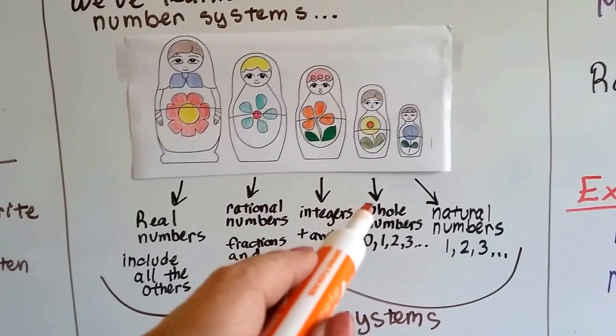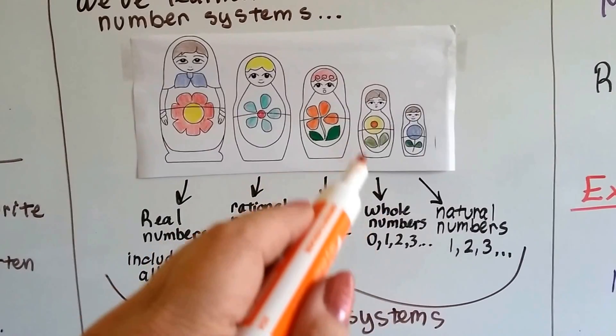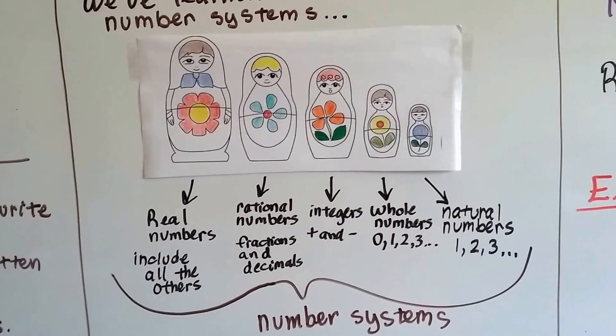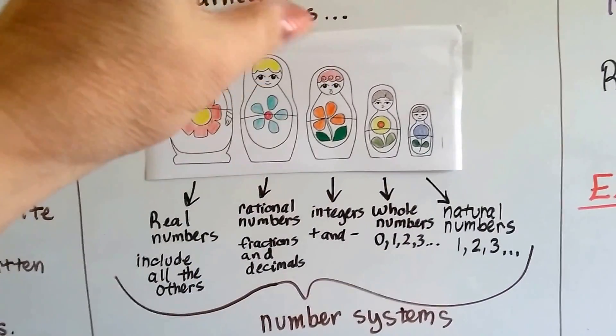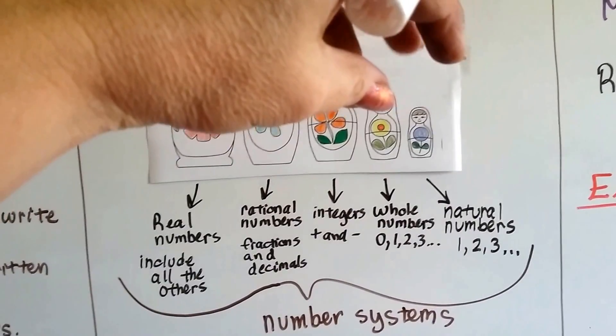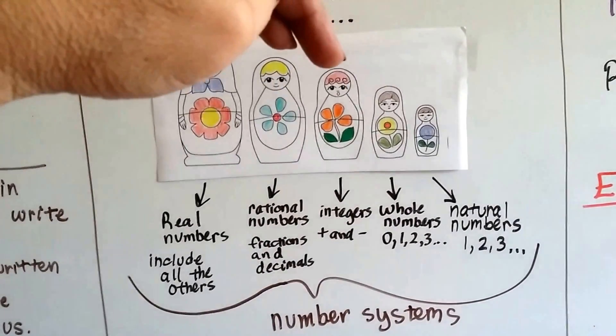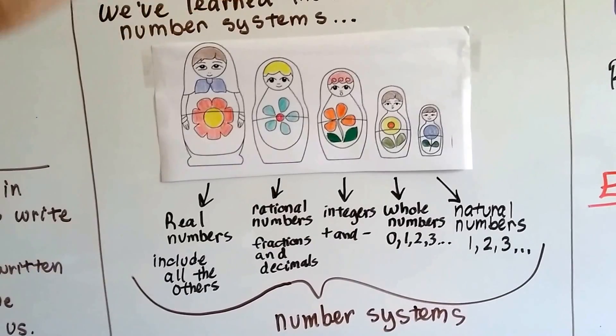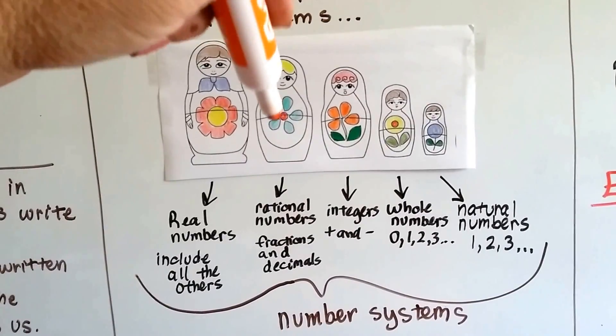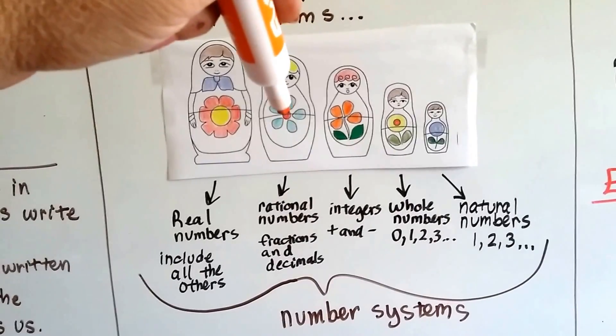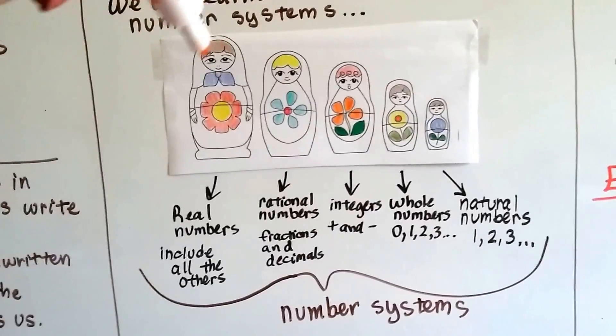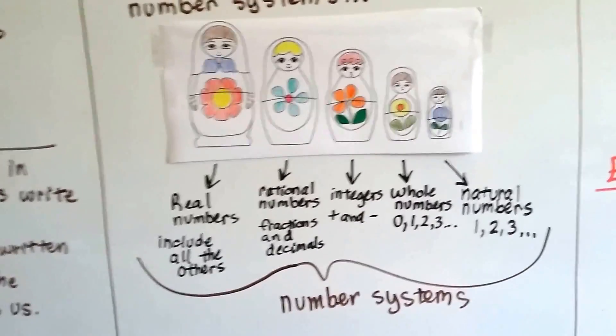Well, natural numbers would fit inside of the whole numbers. The whole numbers include the natural numbers. And if we took the top off of this one, we could take the whole numbers and natural numbers and put them inside of the integer one. We could take the top off of this one and fit these three inside of the rational numbers. That's fractions and decimals.